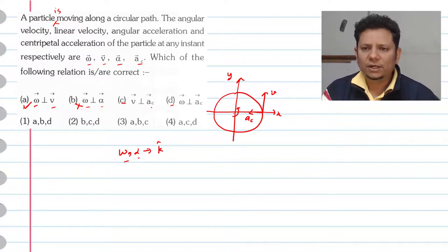Option c means that v is perpendicular to ac. So v is always in the tangential direction along the circular path. And ac will always point toward the center.